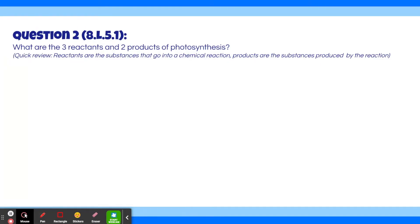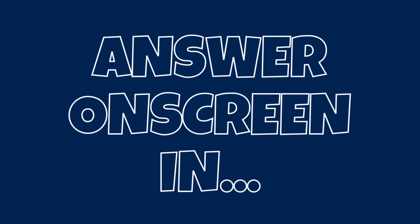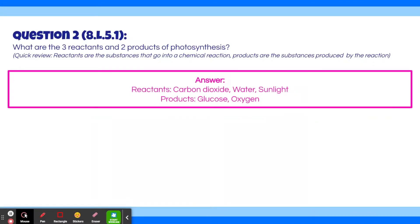Question 2: What are the three reactants and two products of photosynthesis? Keep in mind that reactants are the substances that go into a chemical reaction, and products are the substances produced by the reaction. The reactants are carbon dioxide, water, and sunlight, and the products are glucose and oxygen.